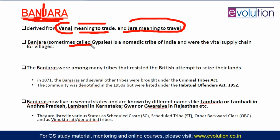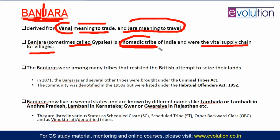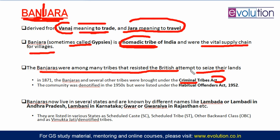The Banjara are a nomadic tribe always on the move, used to transport objects from place to place, holding a vital supply chain for villages at that time. With changing times, there are almost no nomads in the Banjara community. They have settled, and the British tried hard to settle them and also tried to seize their land for plantation cultivation. These tribes fiercely resisted British attempts. In 1871, the Banjara and several other tribes were brought under the Criminal Tribes Act.